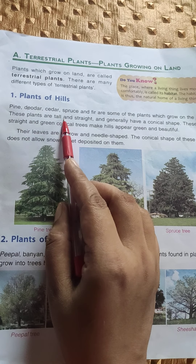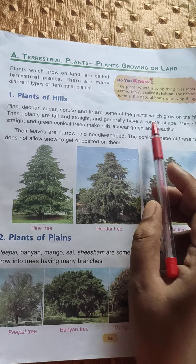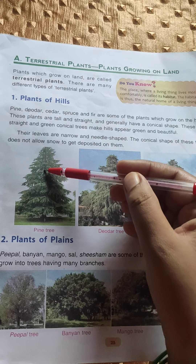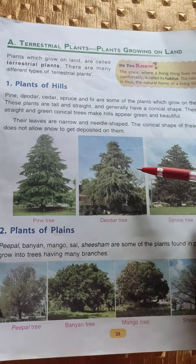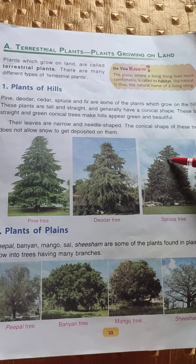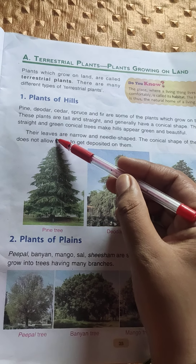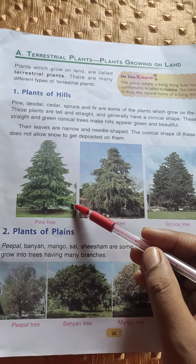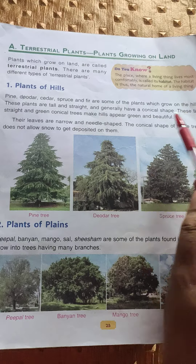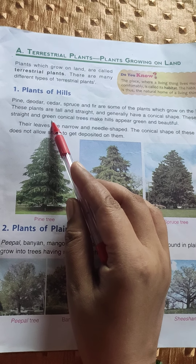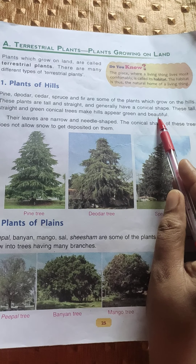These plants are tall, straight, and generally have a conical shape. Straight means moving uniformly in one direction, and conical shape means like a cone. A birthday cap and an ice cream cone are examples of conical shape. These tall, straight, and green conical trees make hills appear green and beautiful.